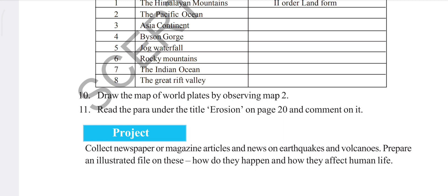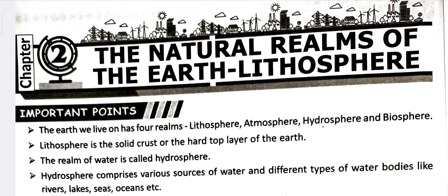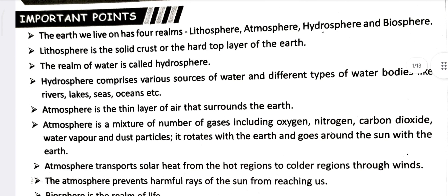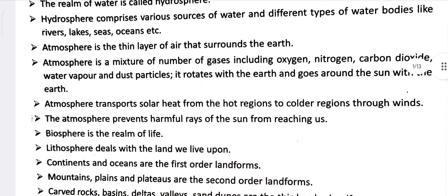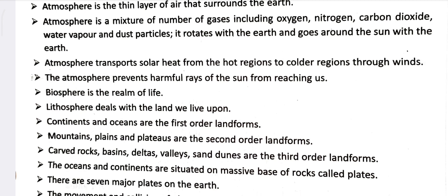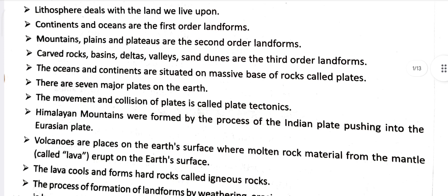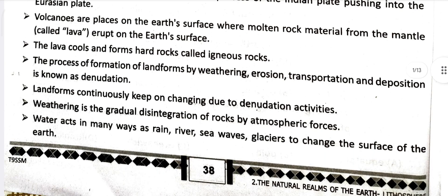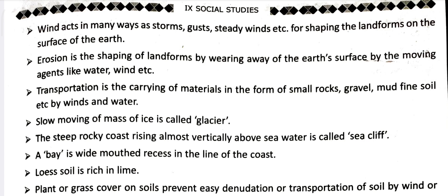As you can see, this is Chapter Number 2 — The Natural Limbs of the Earth Atmosphere. These are the important points. If you want to write the important points you can write from here, otherwise just skip ahead to the answers. This is the new textbook question answer, so don't worry — just go ahead without any hesitation.